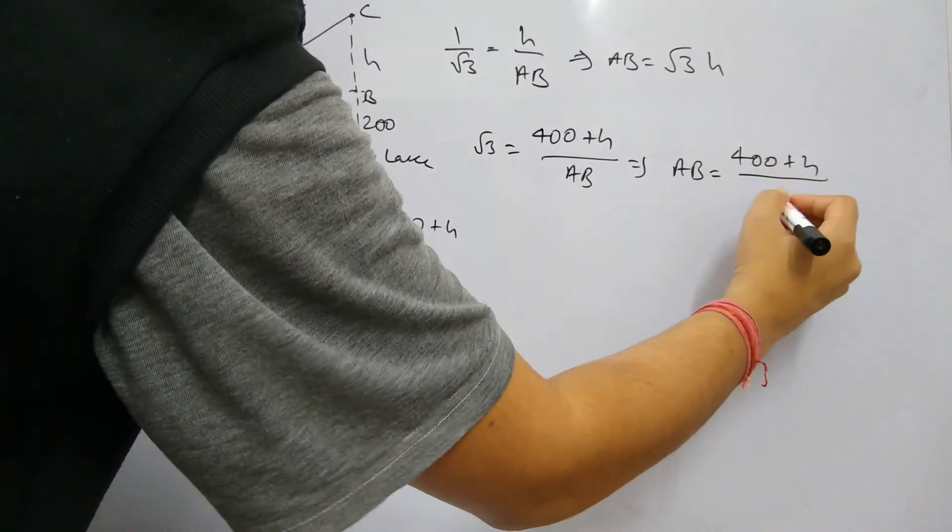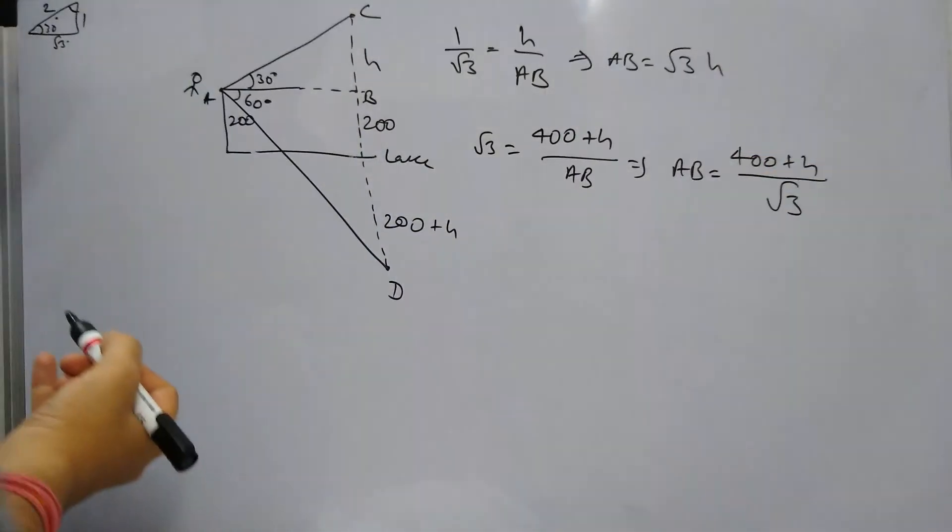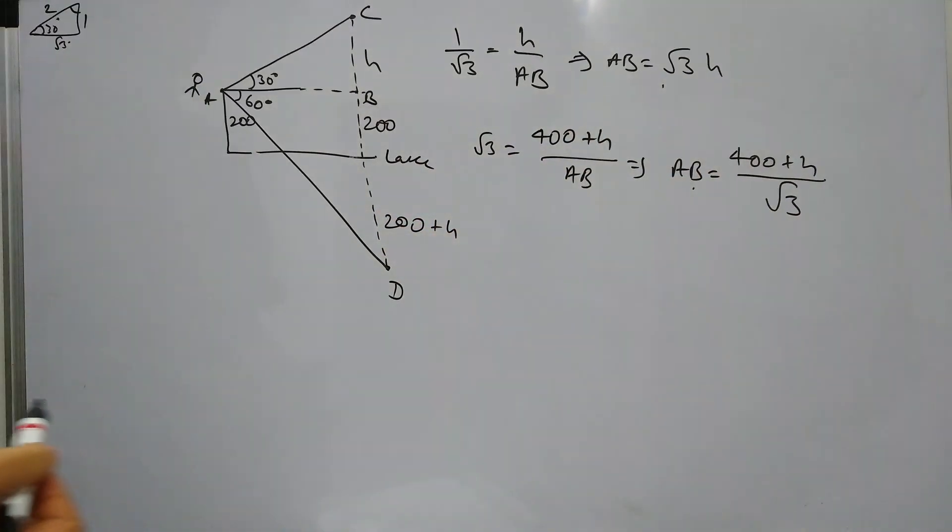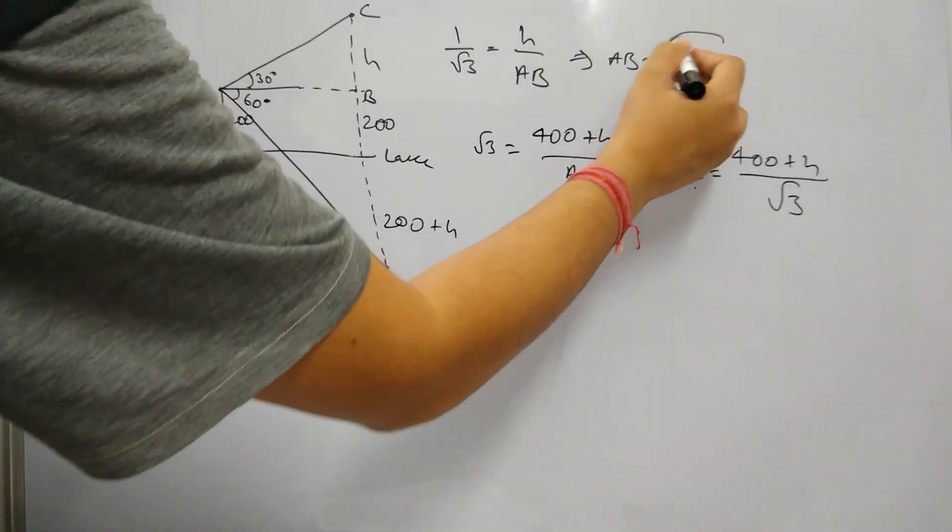AB is 400 plus h by root 3. Now we just need to compare these two things.